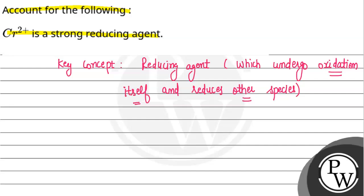So if we talk about the configuration of Cr²⁺, Cr²⁺ has configuration 3d⁴. After losing one electron, when it undergoes oxidation, it loses one electron.